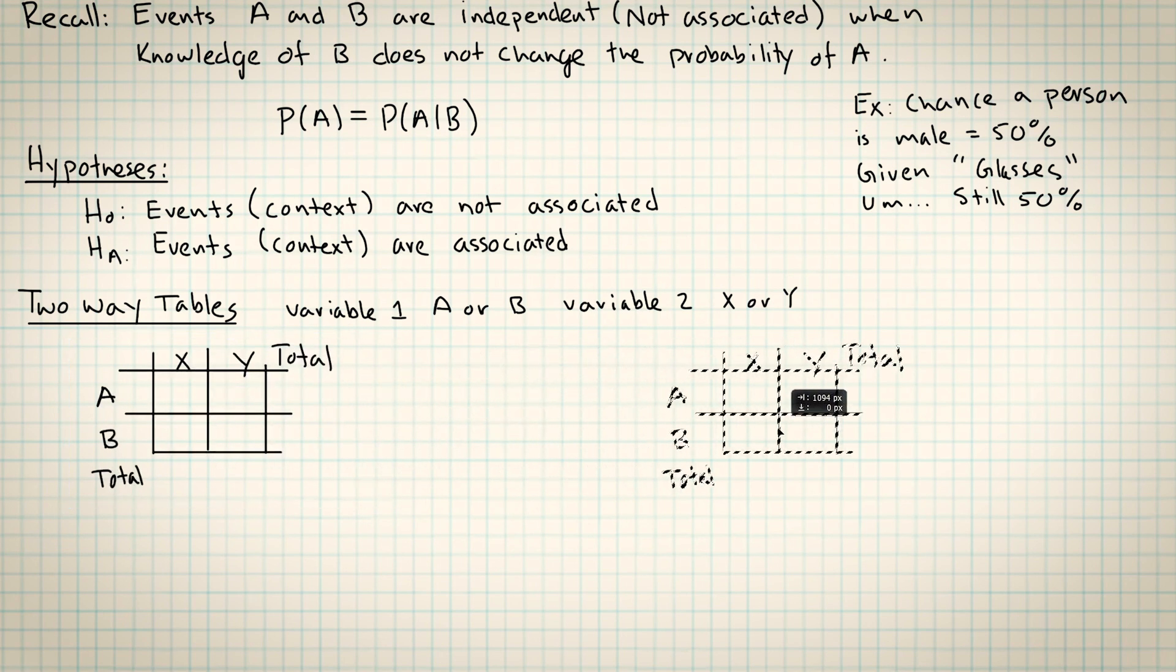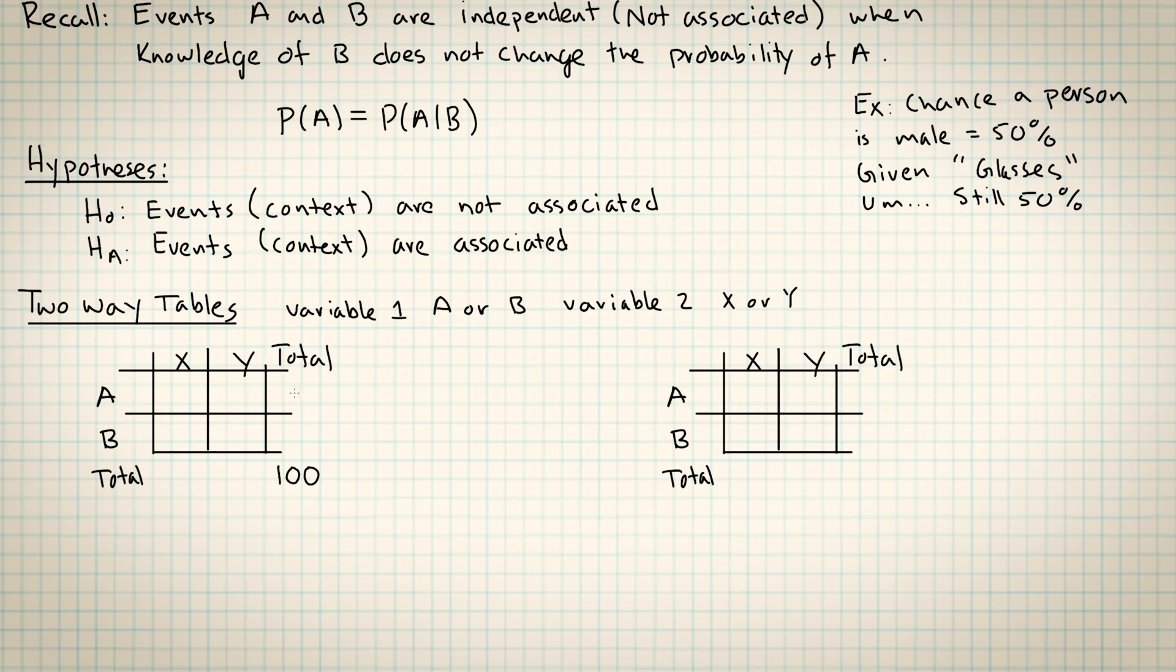I'm going to try to make H0 look true in the first picture, and H0 look false in the second picture. These counts, to me, look like there is no association.